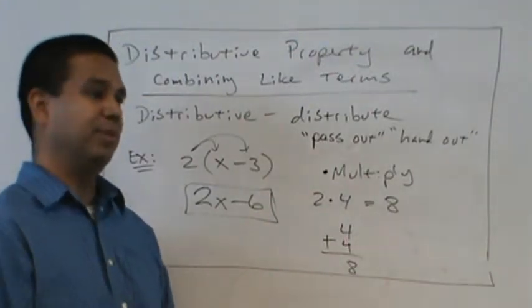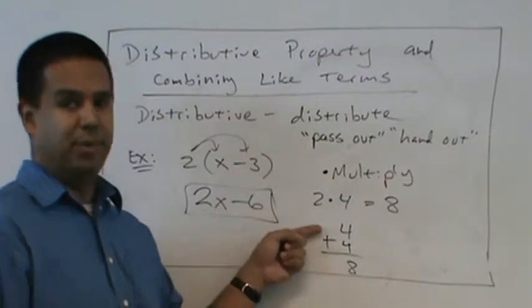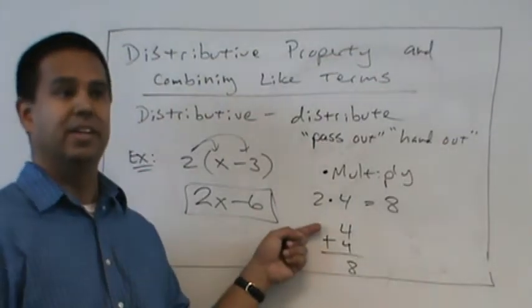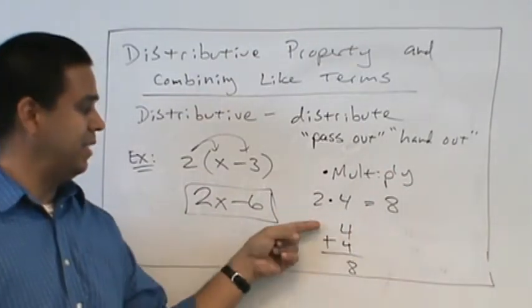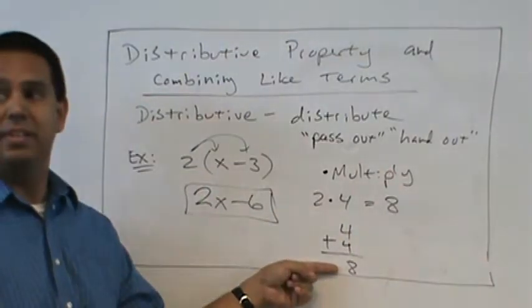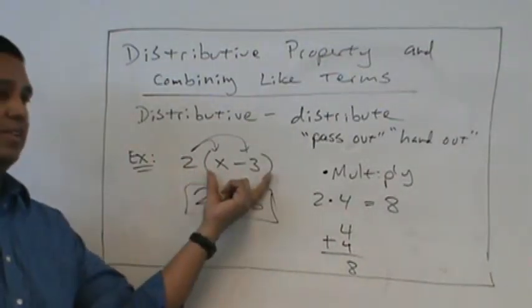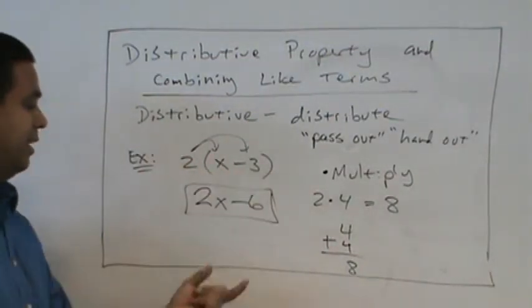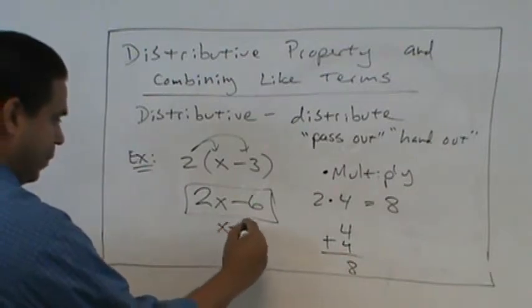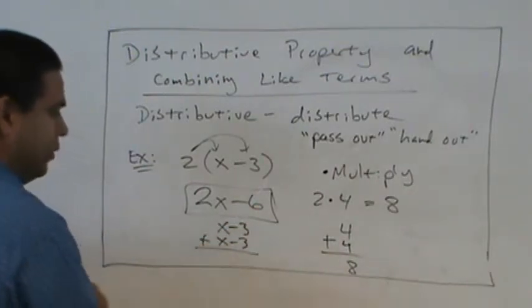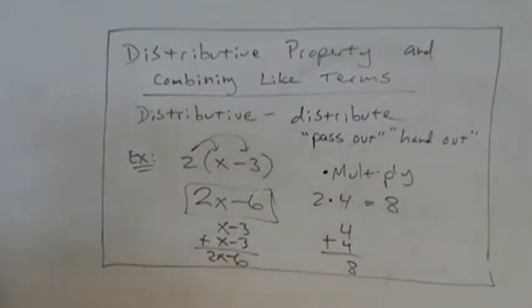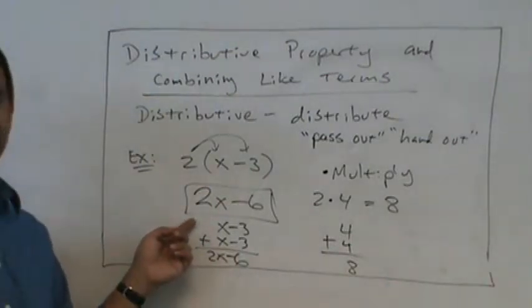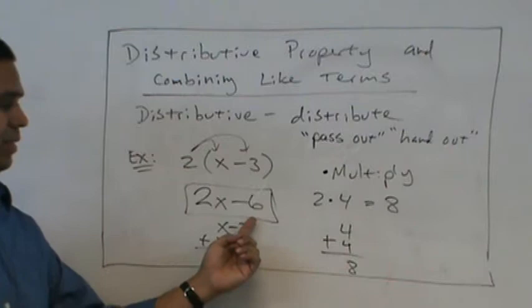Right? 2 times 4, what that's really saying is add the number 4 two times. So we get 8. So yes, we multiply, but what you're really doing is adding, a repeated addition. Okay? So that's the same principle here. If I said 2 times 4 means add the 4 twice, then when I say 2 times x minus 3, what I'm really saying is do x minus 3 twice. Add those up. x minus 3 plus x minus 3. Get 2x minus 6. So that's why this works. So the shortcut is to just distribute it.